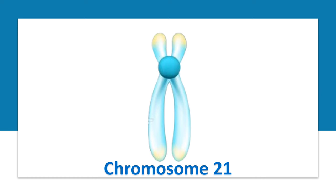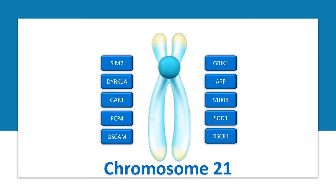There are many genes on chromosome 21 that are responsible for all the classical features associated with Down syndrome. Two genes, DYRK1A and DSCR1, are potential targets for therapy in Down syndrome and are currently being evaluated.